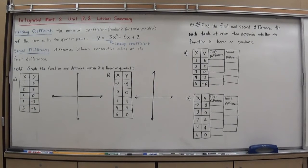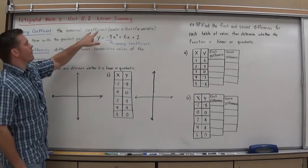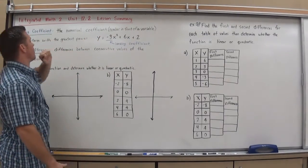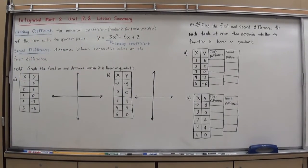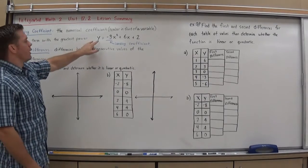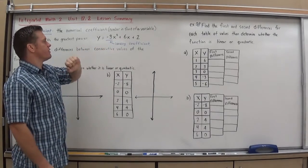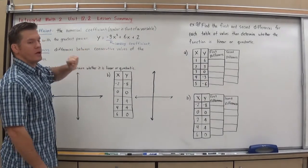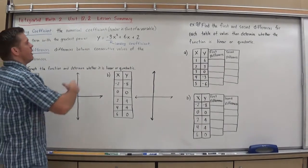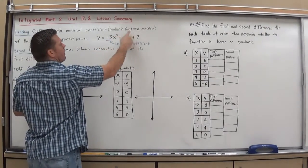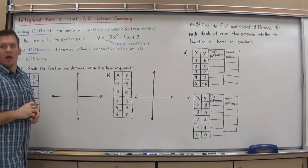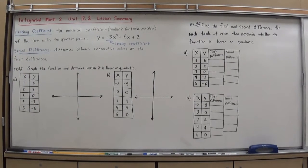One thing we need to know about with these functions is the leading coefficient. The leading coefficient is the numerical coefficient — the number in front of a variable — of the term with the greatest power. For example, in the function y equals negative 3x squared plus 6x plus 2, negative 3 is our leading coefficient because x squared is our highest power and negative 3 is in front of it. That leading coefficient is important because it determines which way the graph opens up.